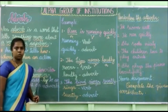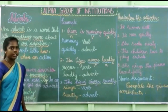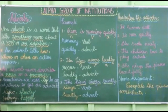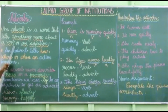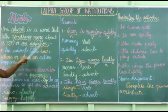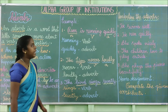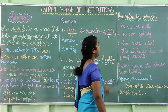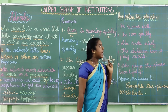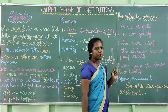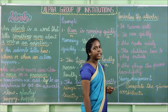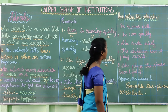Have you all understood, children? Shall we recap it once again? An adverb is a word that tells something more about a verb or an adjective. Now we will do an interesting activity. You have to underline the adverbs. Read the sentence properly, identify the adverb, and underline it.